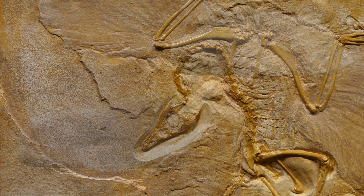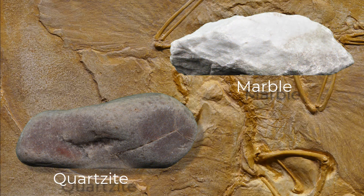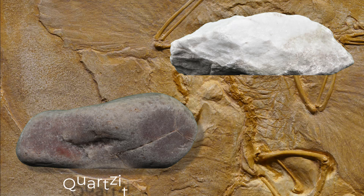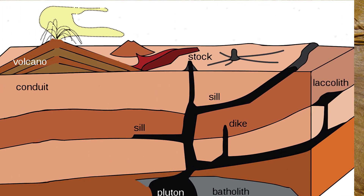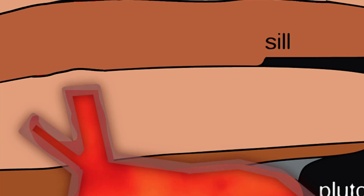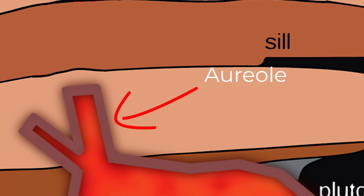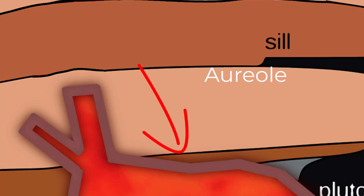The two most important types of non-foliated metamorphic rocks are marble and quartzite, both of which form in the presence of something called contact metamorphism. Contact metamorphism usually occurs when magma intrudes the surrounding sedimentary or igneous rock. The magma heats up the rock and essentially just bakes it. The localized zone of baking is called the aureole, and it's within that zone that the non-foliated metamorphic rocks form.